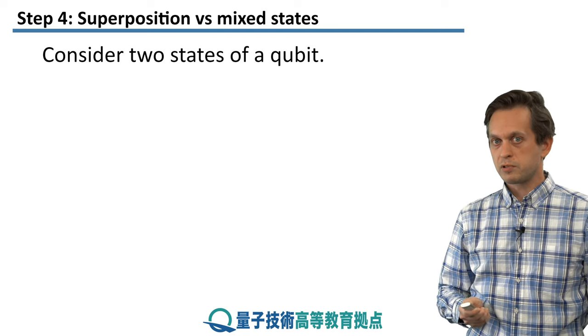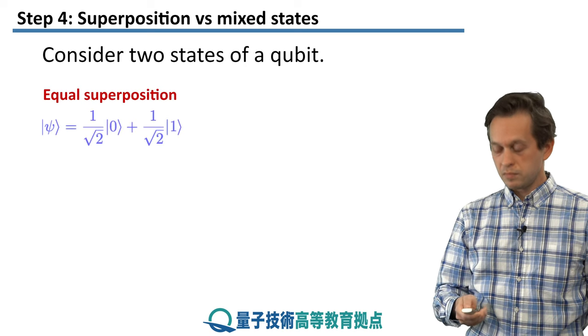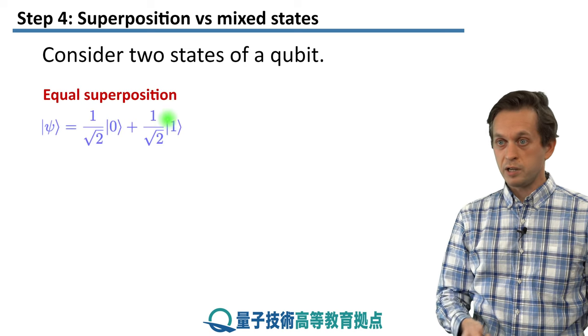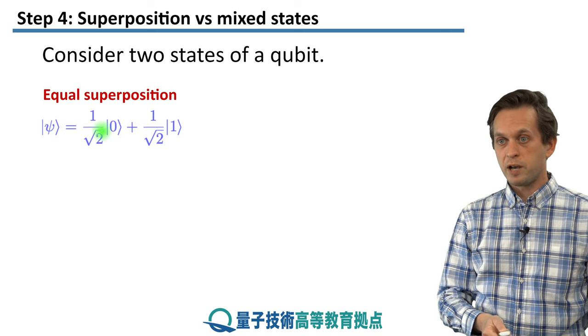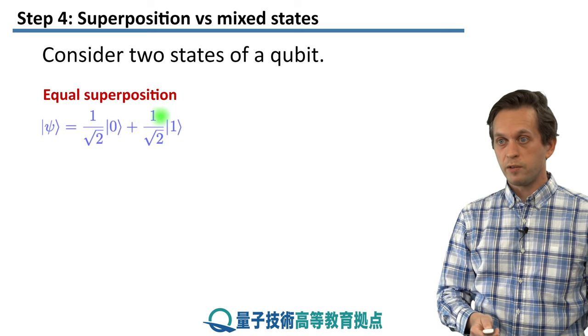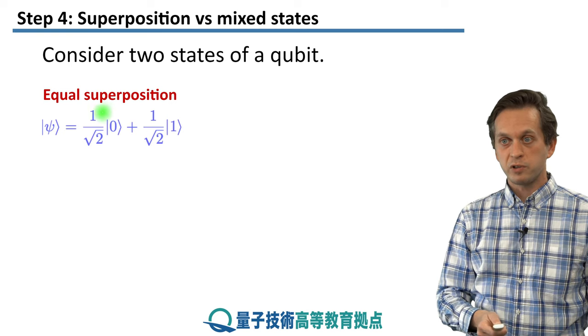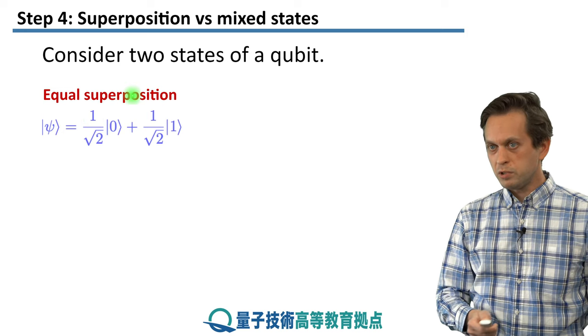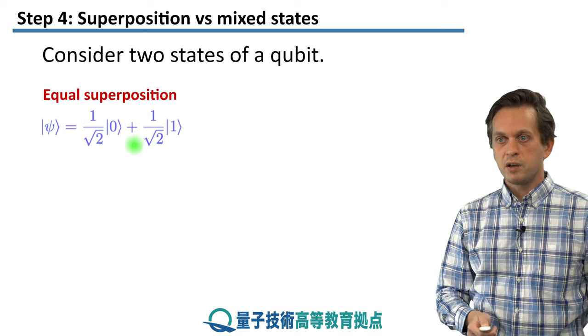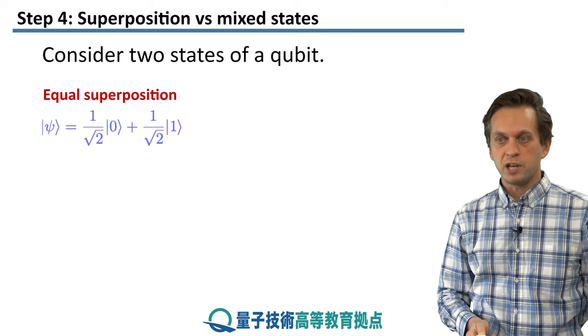Consider two examples of the states that the qubit can be in: a superposition, and in particular an equal superposition of the 0 and 1. So we have 0 weighted by 1 over square root of 2, and 1 weighted by 1 over square root of 2. So if we take these probability amplitudes and we take the modulus squared, we get 1 half, 1 half. So intuitively this kind of means that we are 50% of the time in 0 and 50% of the time in 1.